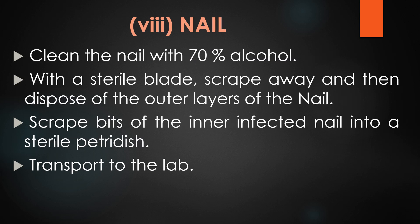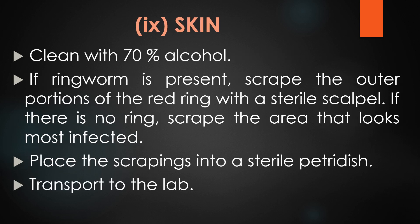For collection of infected nail samples, clean the nail with 70% alcohol. With a sterile blade, scrape away and dispose of the outer layer of the nail. Scrape bits of the inner infected nail into a sterile petri dish and transport to the microbiology laboratory for further analysis. For collection of infected skin samples, clean with 70% alcohol to remove surface contaminants. If ringworm is present, scrape the outer portion of the red ring with a sterile scalpel. If there is no ring, scrape the area that looks most infected. Place the scrapings into a sterile petri dish and transport to the microbiology laboratory for further analysis.